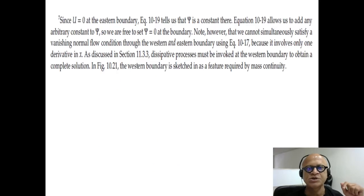First-order equation allows one boundary condition, and U has to be zero at the eastern boundary because of friction, no slip boundary, so that means U is zero. So without any loss of generality, we can just set stream function to be zero at the eastern boundary.